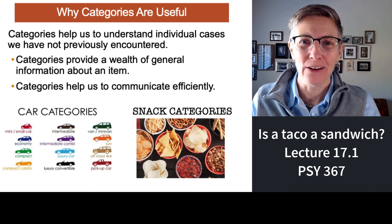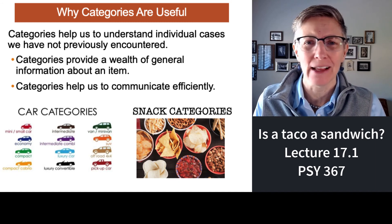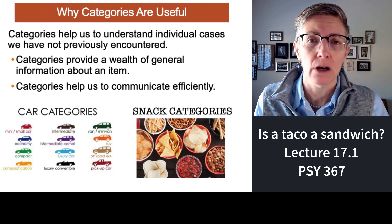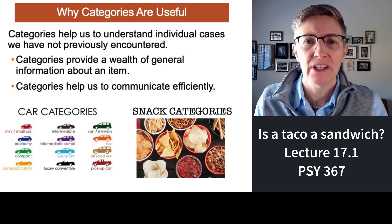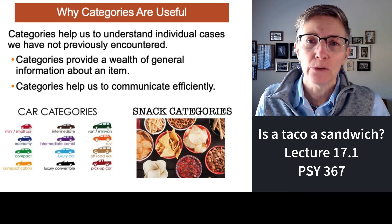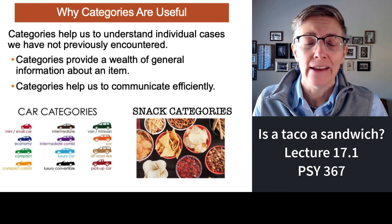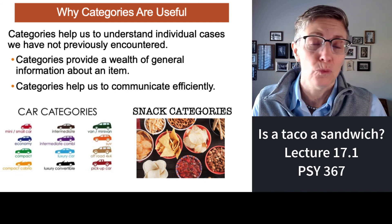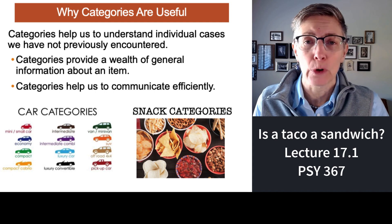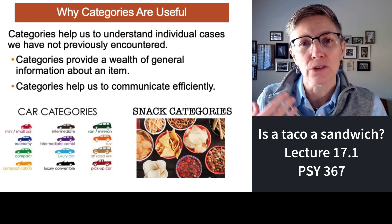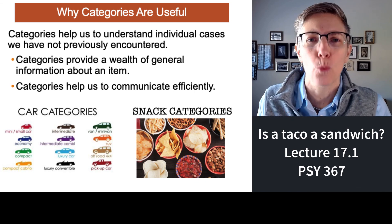So why do we even use categories if they're so hard, challenging, malleable, and confusing? Well, they're useful. If you tell me you saw a dog — even some bizarre kind no one has ever seen before — the fact that you use the category 'dog' is enough to tell me what to expect. If I rent a car from Hertz and they categorize it as a subcompact or a sedan, I have a sense of what I'll get. If you ask me to bring snacks for a party, I know you mean something like chips and not apple pie. Categories are a very useful way to convey information quickly, which is why we use them.